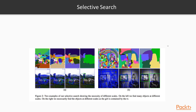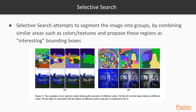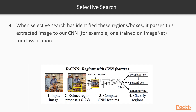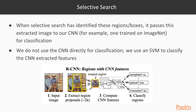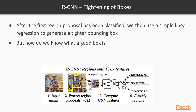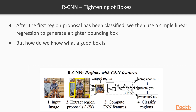The selective search algorithm segments the image into different groups by combining similar areas such as colors or textures, interpreted as blobs or contours. It proposes interesting region boxes, which are fed into a CNN trained on the ImageNet dataset. Rather than using the CNN directly for classification, the extracted CNN features are fed into an SVM classifier, and then a simple linear regression is used to generate a tighter bounding box.